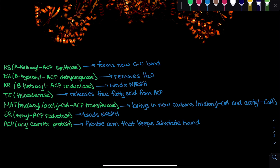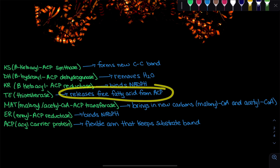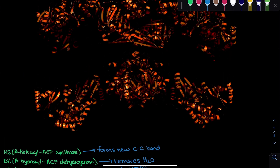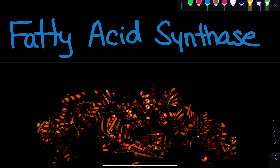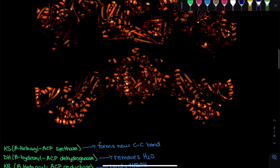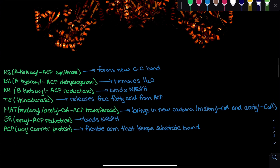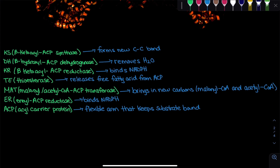Next is the TE domain — the thioesterase — which is going to release the free fatty acid from ACP. Once fatty acid synthase is done creating our fatty acid, this enzyme is going to cleave it off.